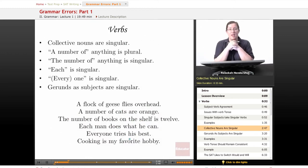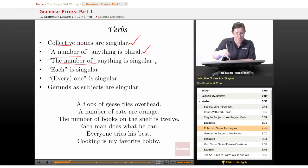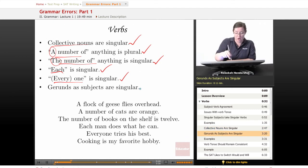Things you need to know about trying to determine whether your subject is singular or plural. If it is a collective noun, which is a noun describing a group, so team or choir or group or gang, those are all singular. A number of anything is treated like a plural subject. The number of anything is treated like a singular subject, so watch for those articles, a and the. Each is singular, because it means each one of something. Everyone, or everyone one word, is always singular, and gerunds as subjects are singular.